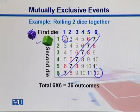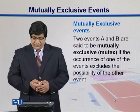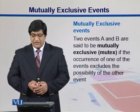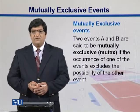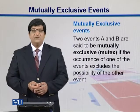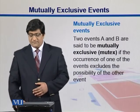With these 36 events we can draw different probability distributions. Two events A and B are said to be mutually exclusive — or mutex — if the occurrence of one event excludes the possibility of the other event.